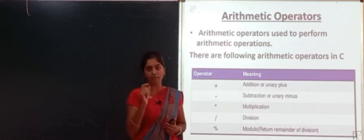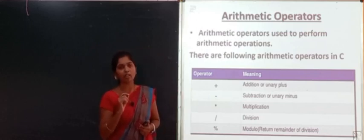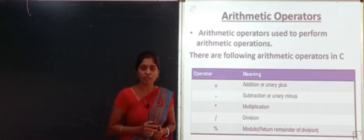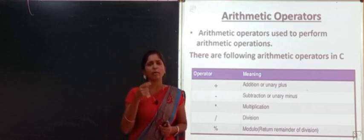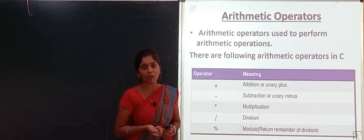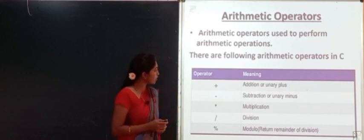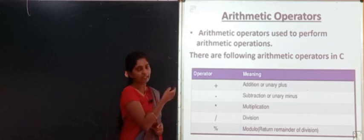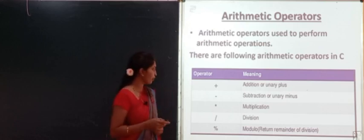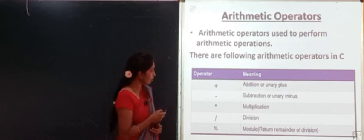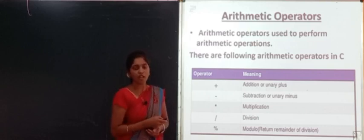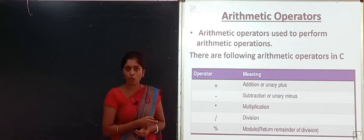The first one is arithmetic operators. Arithmetic operators are used to perform arithmetic operations. The basic arithmetic operators in C programming are: plus symbol for addition or unary plus, minus symbol for subtraction, star symbol for multiplication, slash symbol for division, and percentage symbol for modulus.